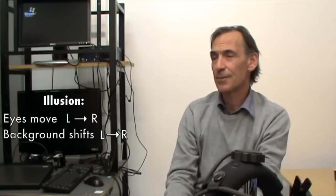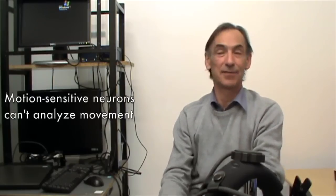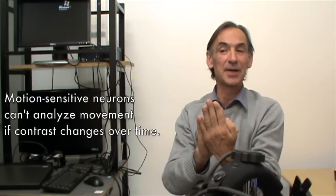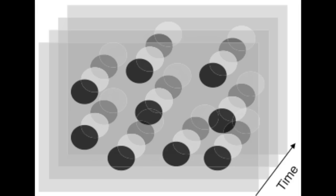Why is it so? Well, it is the result of the activity of neurons in the brain that respond to motion. And it turns out that those neurons cannot correctly analyze a movement if the image is changing of contrast over time. And this was discovered in the 70s by Stuart Anstice. And they call this phenomenon reverse phi.